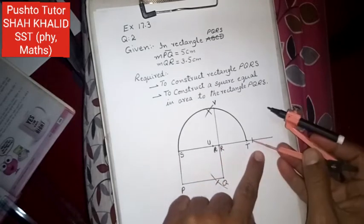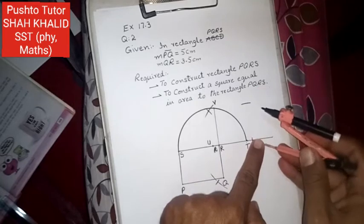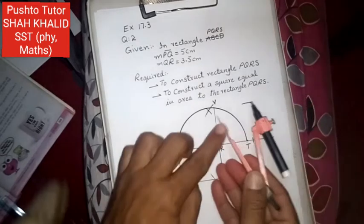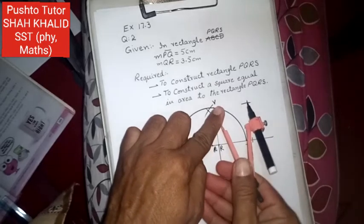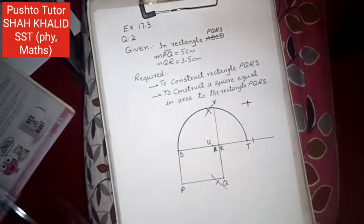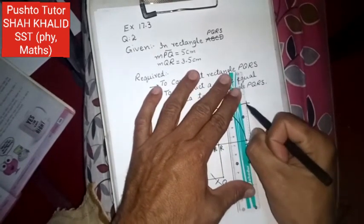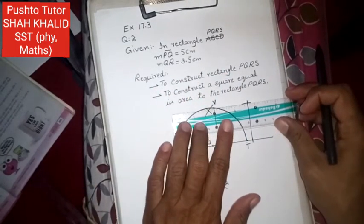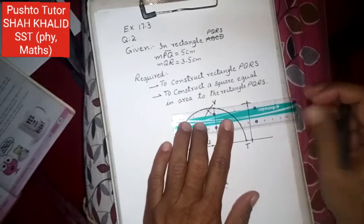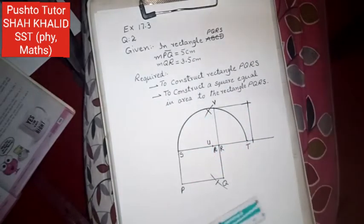Similarly, at the V point, with the same opening, draw an arc. And at the endpoint V, draw an arc. These two arcs will intersect. Mark the intersection point. This intersection will be with the V point, and the intersection will be with this point. Now together this will form the required square, which will be complete.